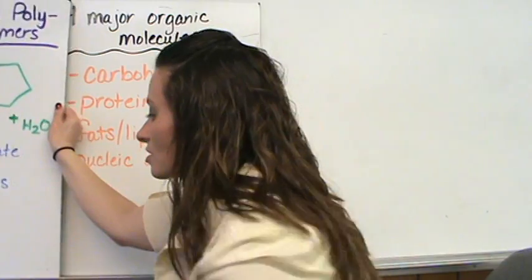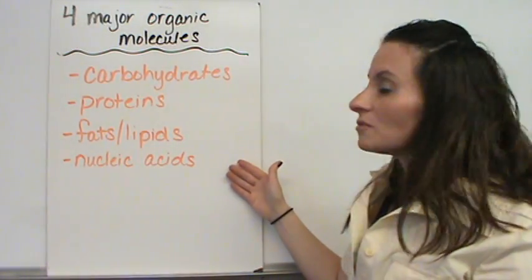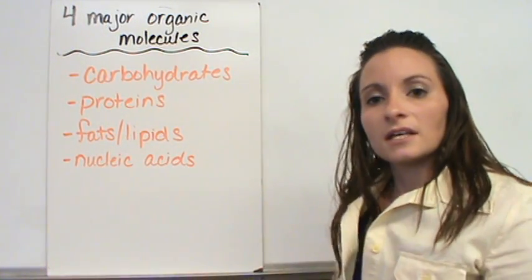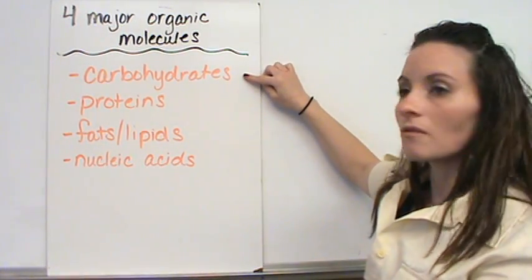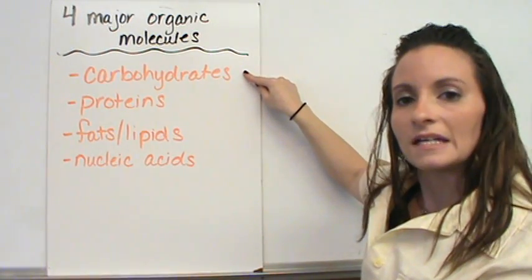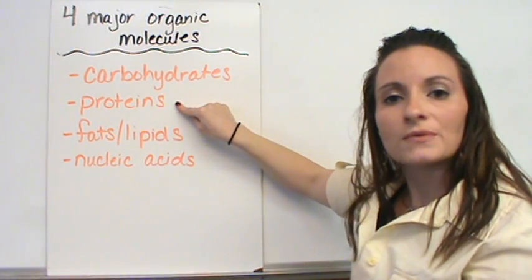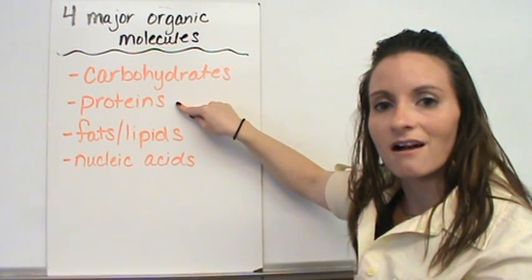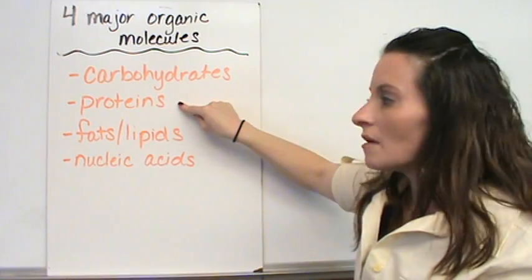Now, there are four major organic compounds that we are going to talk about. The four major organic molecules are carbohydrates. Carbohydrates are the main energy source for all living things. Proteins. Proteins make up the majority of all living things. All of our body parts, our hair, our nails, our skin, our muscles. All of those make up the proteins.